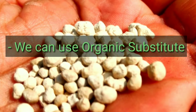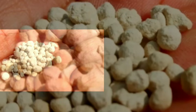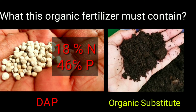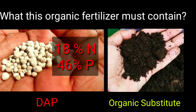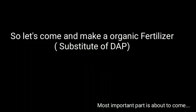Here we are going to explain how to make this organic substitute of DAP fertilizer. Before we explain it, understand what exactly we require from that substitute. Since DAP contains almost 18% nitrogen and 46% phosphorus, our organic substitute should also contain almost the same amounts of nitrogen and phosphorus.